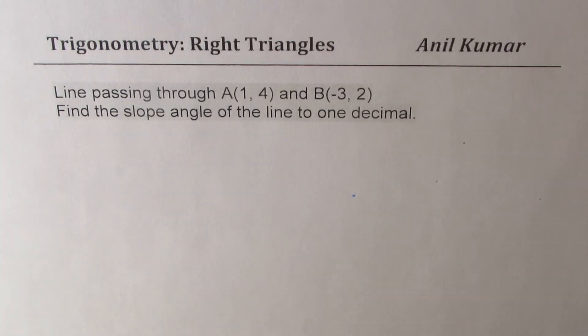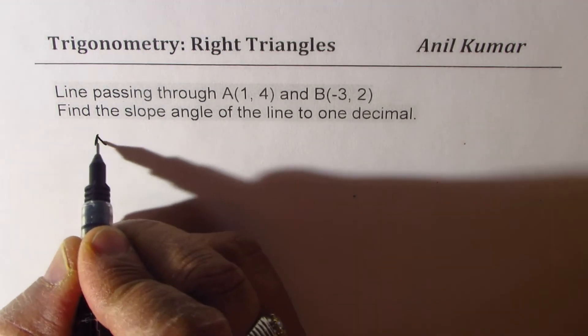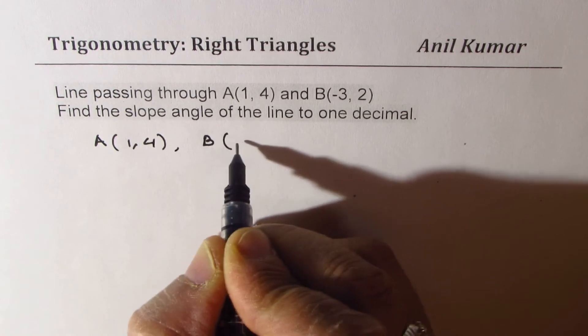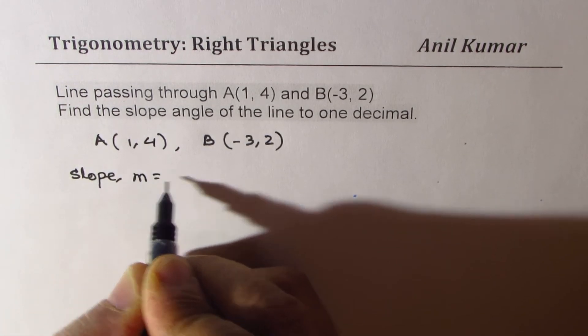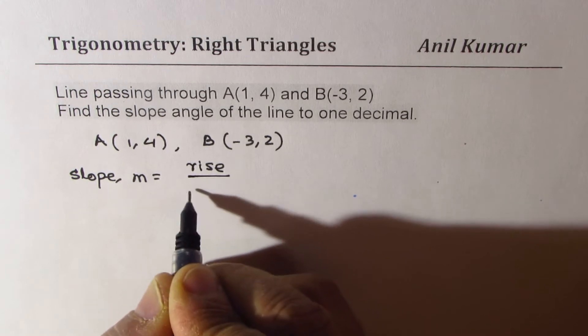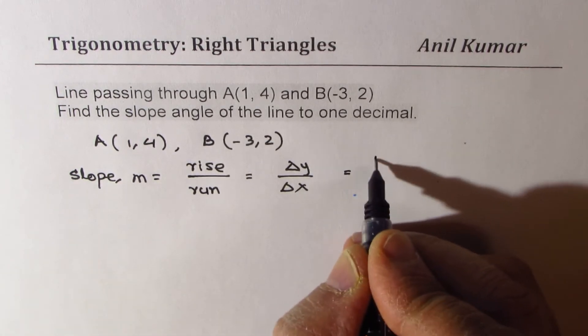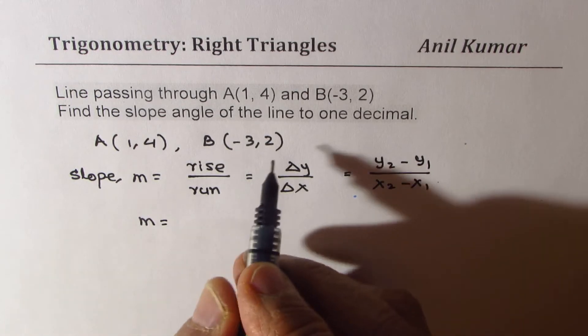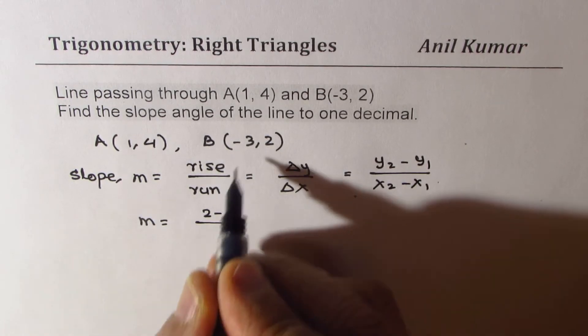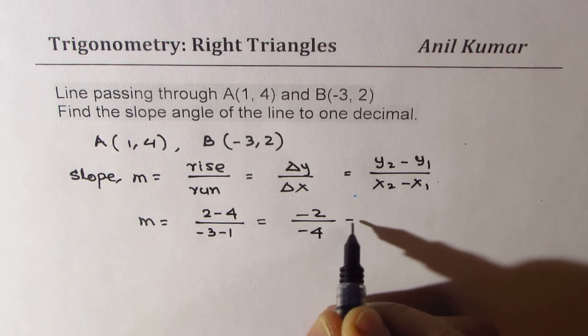Let's take up the next question, which is line passes through two points A and B. Find slope angle of the line to one decimal place. We are given two points: A is (1,4) and B is (-3,2). To find slope angle we need to find slope first. Slope m is rise over run. Rise is change in y value and run is change in x value, or you could use the formula y2 minus y1 over x2 minus x1. So for us slope m will be 2 minus 4 over -3 minus 1. 2 minus 4 is -2, -3 minus 1 is -4, so we get 1/2.